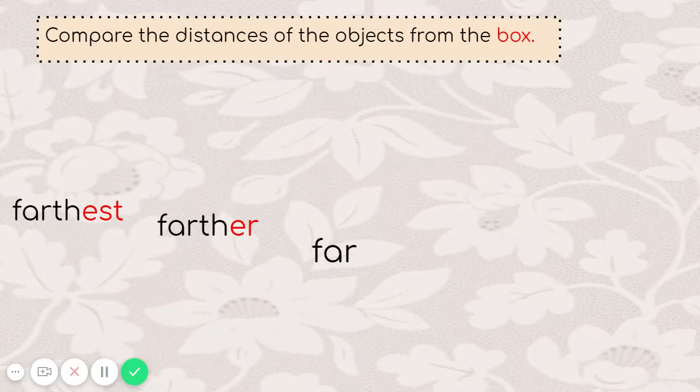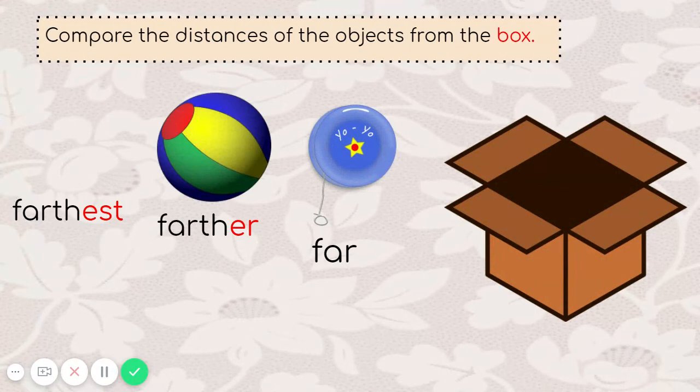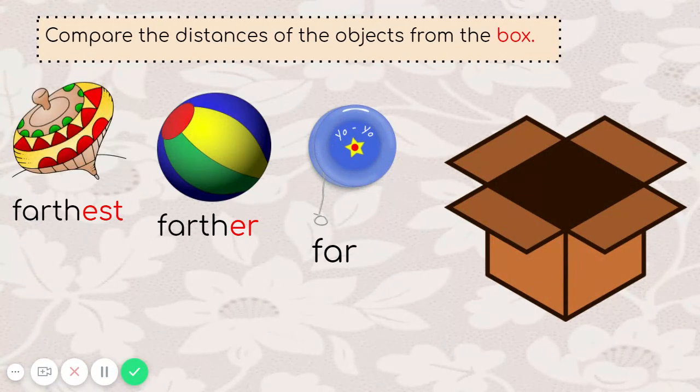Let's compare the distances of the objects from the box. The yo-yo is far from the box. The ball is farther from the box. And the top is the farthest.